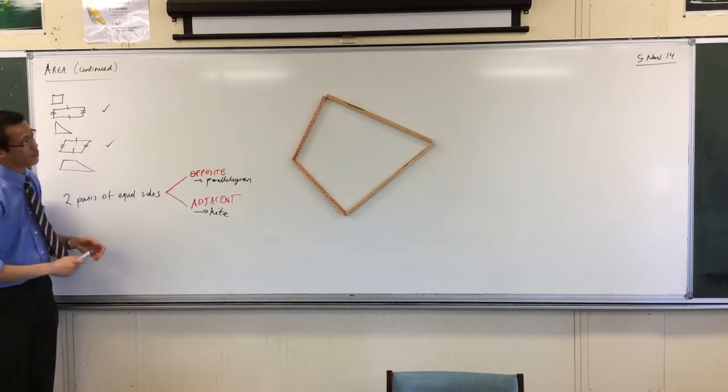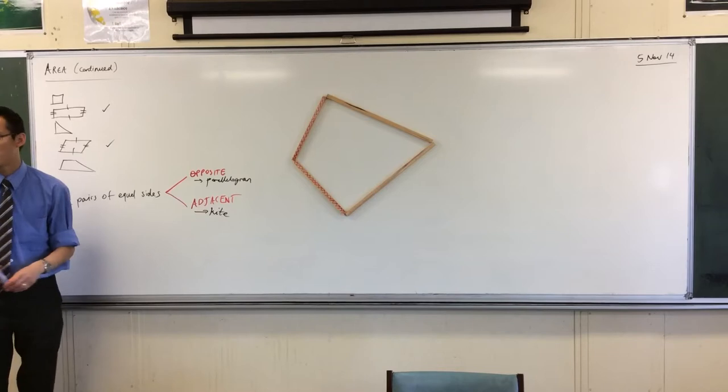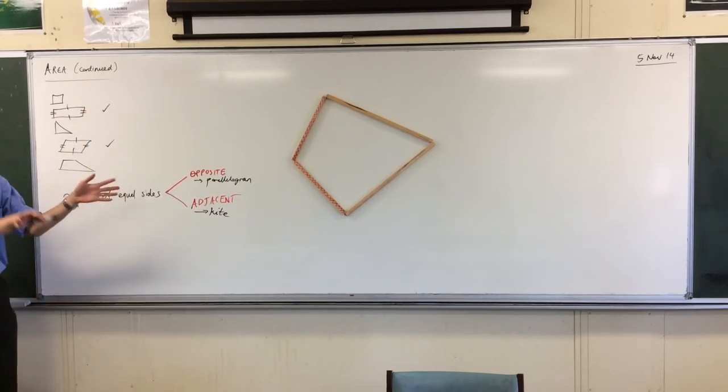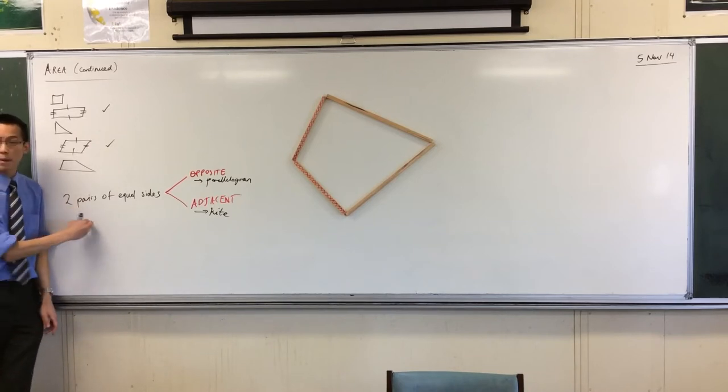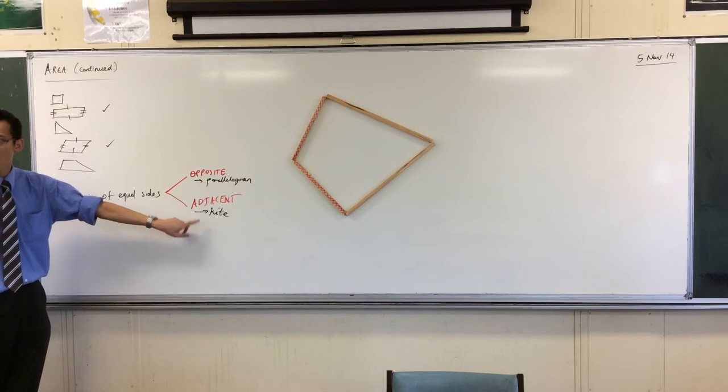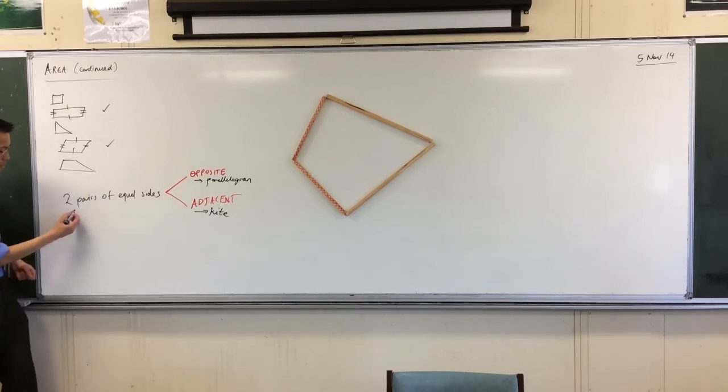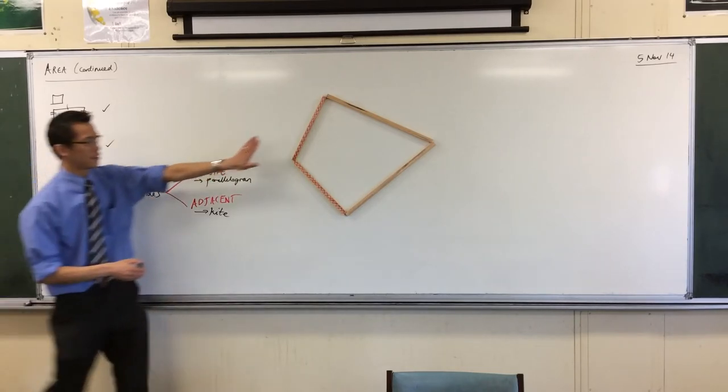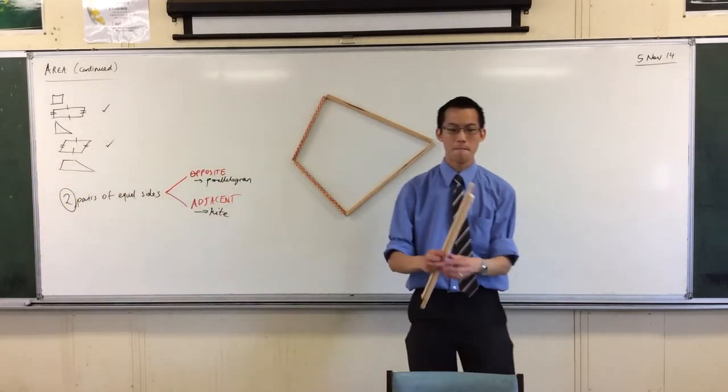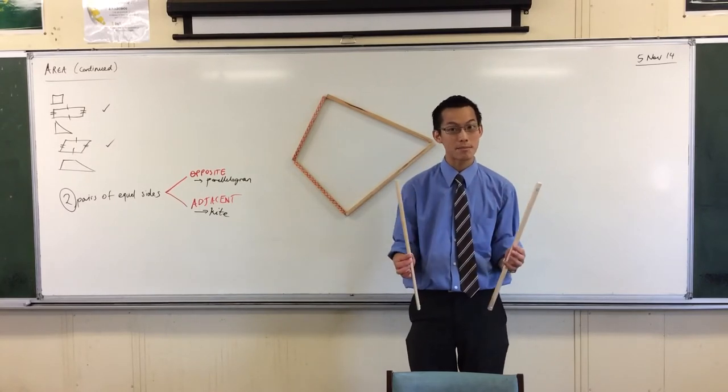Now the reason why I put mine sideways is because I know that what I want to do next won't fit lengthways. Do you remember I said two pairs of equal sides? Well we've got one more shape to look at after the kite, which is what happens if you make the two pairs, right? If you make them rather than two pairs that are different, what if you make two pairs that are the same?